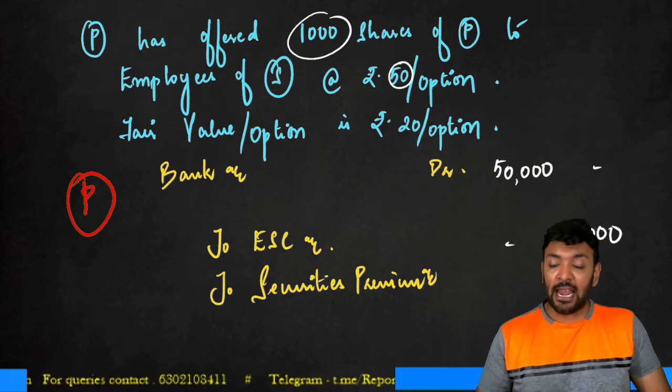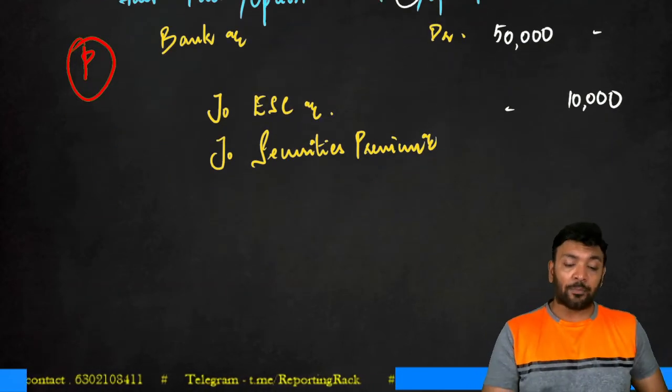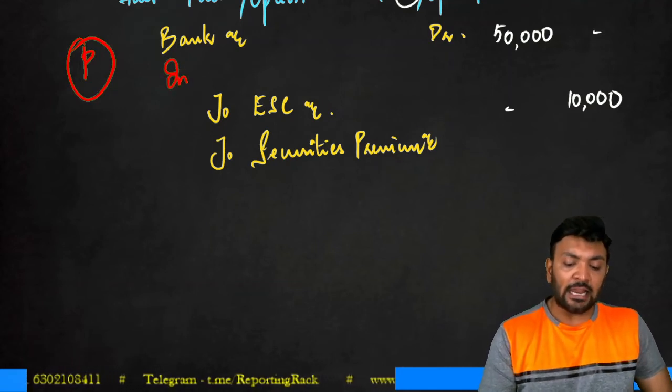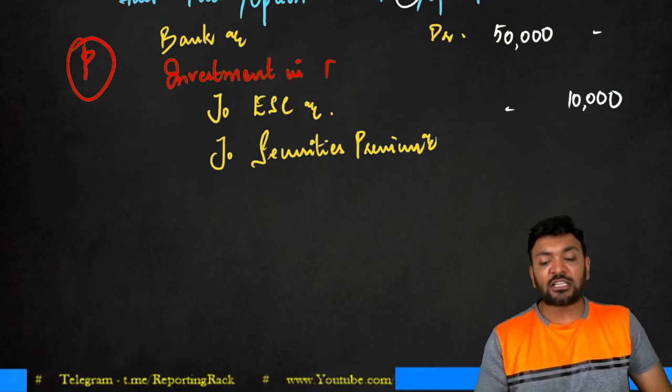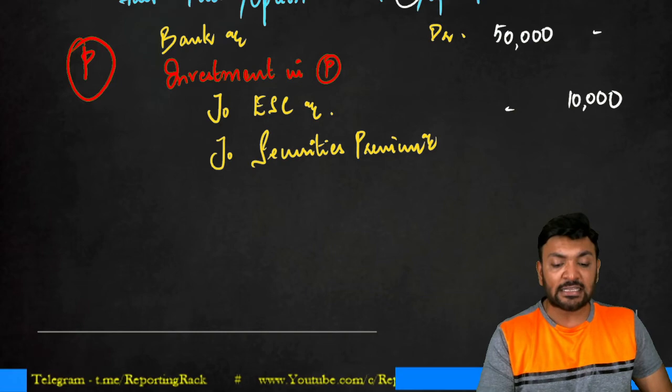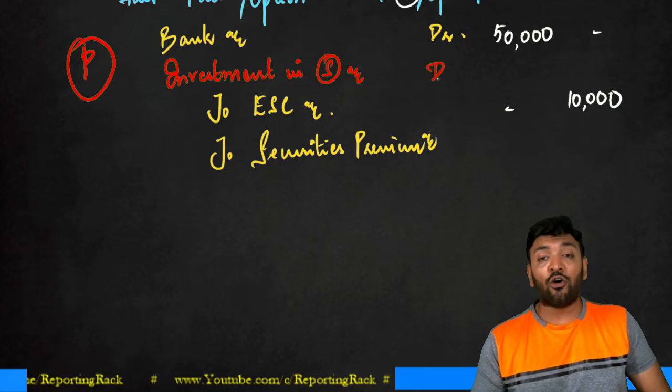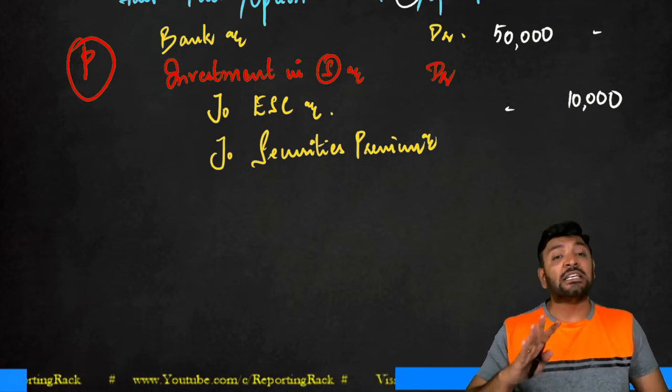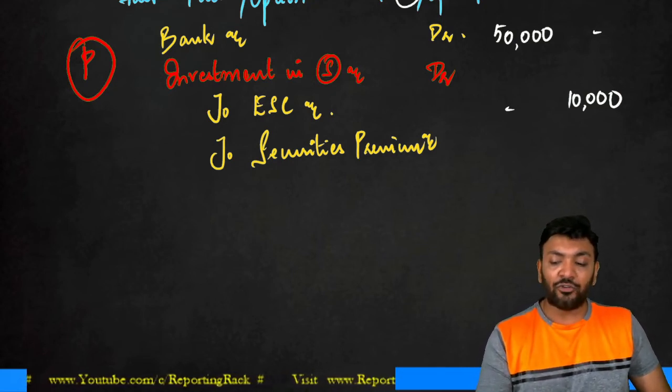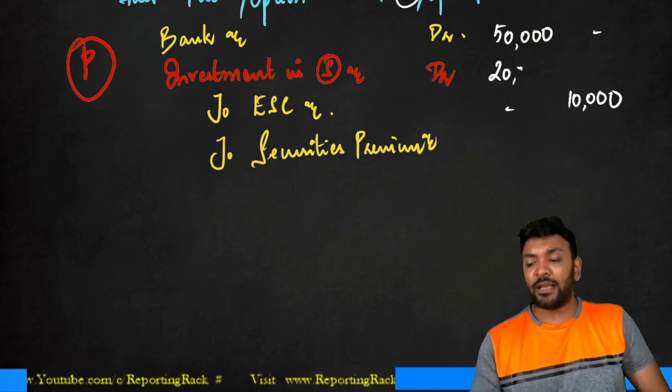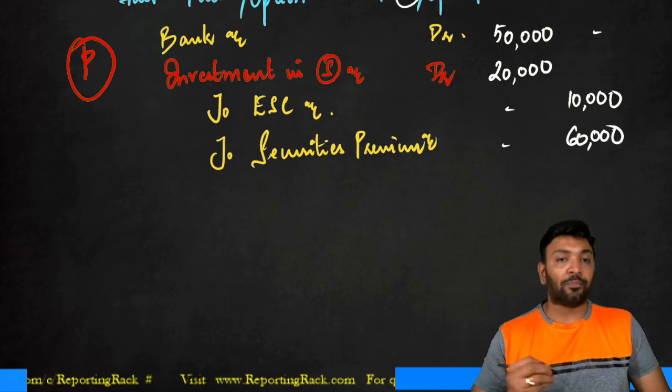But don't forget, there is a loss to the company for approximately 20 rupees. This loss to the company should be recorded as investment in subsidiary. Why am I debiting investment in S? Because the cost will be actually recognized by the subsidiary. Therefore, P cannot debit the expense. The expense is in the books of subsidiary only. Therefore, investment in S to the extent of 20,000. 20 rupees of 1,000 shares. Therefore, 60,000 is my securities premium.